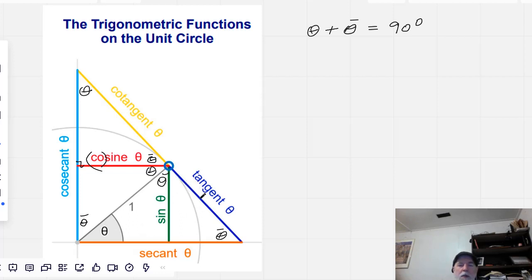And so, the opposite over the adjacent of this theta is, we call it, the tangent of theta. And because the adjacent is just one, this blue line here, this blue segment, is the tangent of theta. And it's tangent. So now we've covered sine, cosine, and tangent.